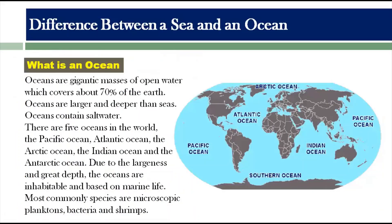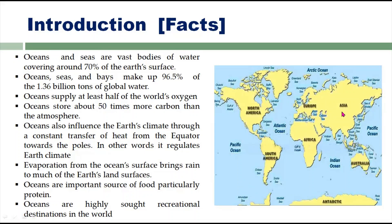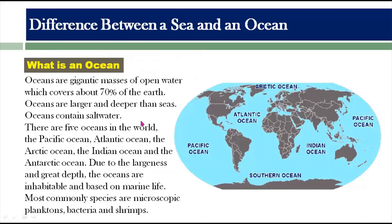Looking at this map, you can see the continents — Europe, Asia, Africa, South America — and the oceans: the Pacific Ocean, Indian Ocean, and Arctic Ocean. So what exactly is an ocean? Oceans are gigantic masses of open water covering about 70 percent of the Earth. They are open water, meaning no land borderline or connection. Oceans are larger and deeper than seas in both size and depth.